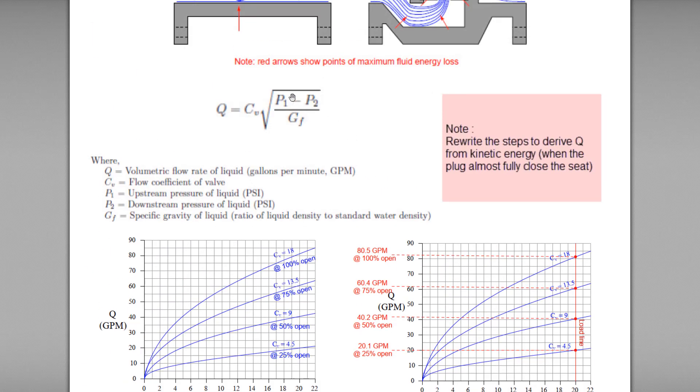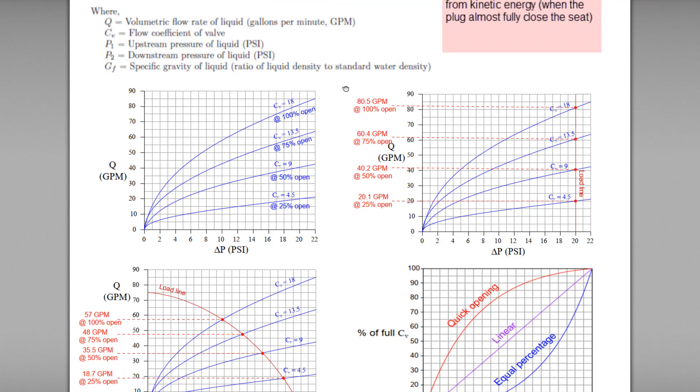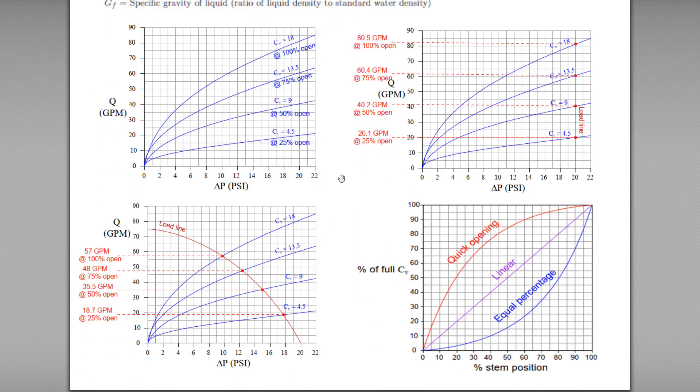Let's say this differential pressure is variable, is changing. So what will the curve look like? For example, if the differential pressure is 18 psi, according to this curve, you notice that the CV is about 4.5 at 25% valve opening. The corresponding flow rate will be 18.7 gallons per minute.